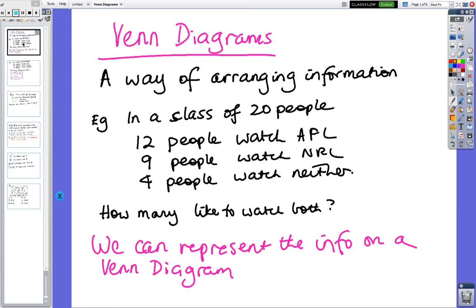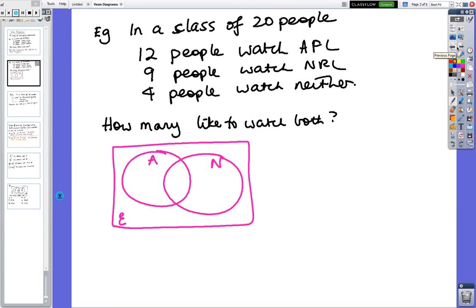Put the heading Venn Diagrams and then come across the next page. Here's our data again, and we're going to try to put the numbers inside the box. First of all, this little squiggly E just means the universe, universal set. So this means everything that can happen. We start off with the people who are outside the circle. So those four people are outside, so we can put the four there.